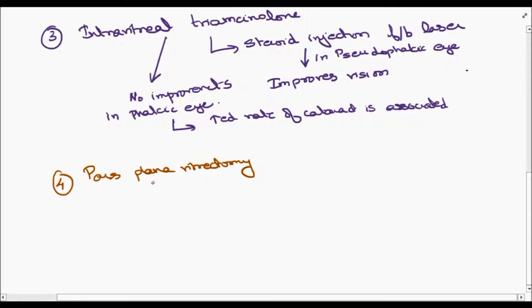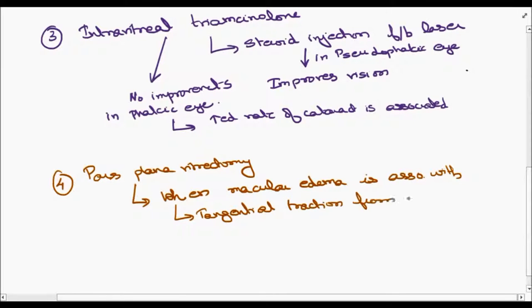Pars plana vitrectomy is indicated when macular edema is associated with tangential traction from a thickened and taut posterior hyaloid.